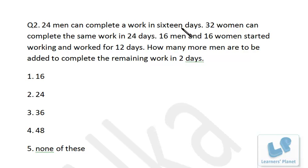Now 24 men start the work and work for 12 days. Since they can complete the entire work in 16 days, in 12 days they will have done 12/16, or three-fourths of the work — that is, 75% of the work.